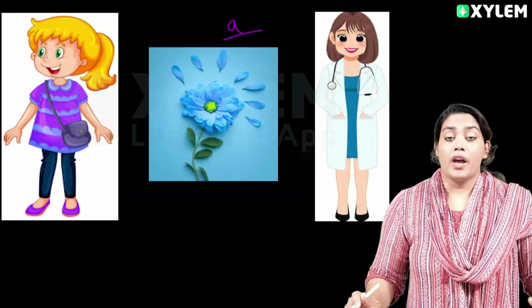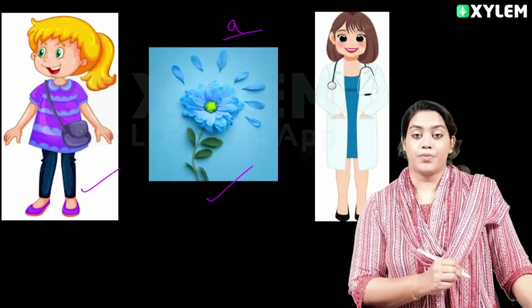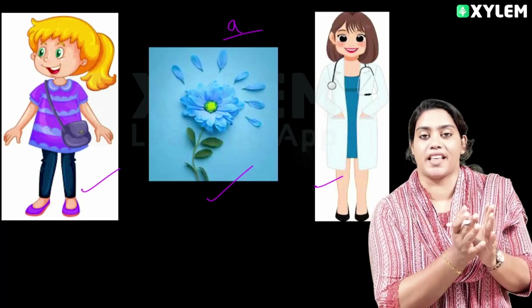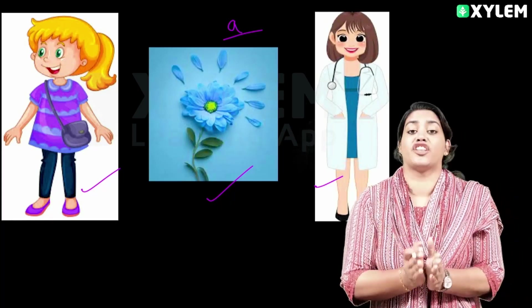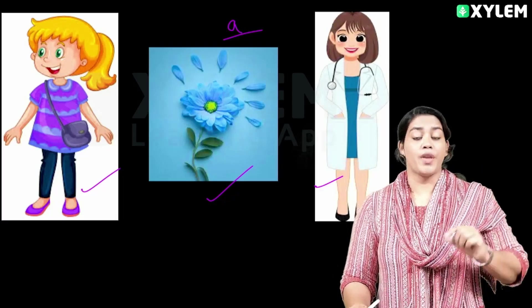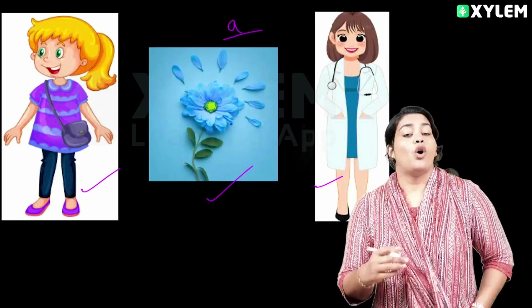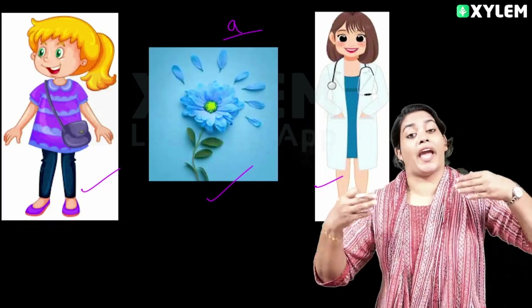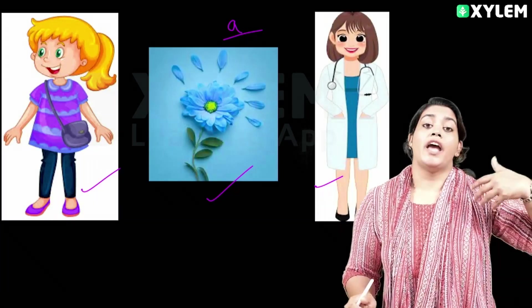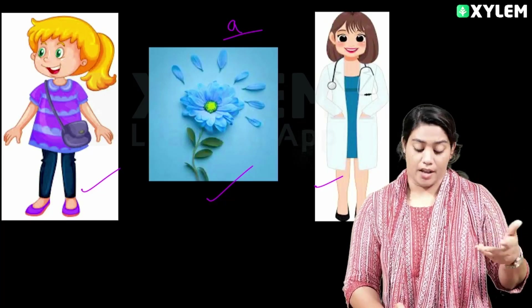For example: a girl, a flower, a doctor. These use the indefinite article 'a'.